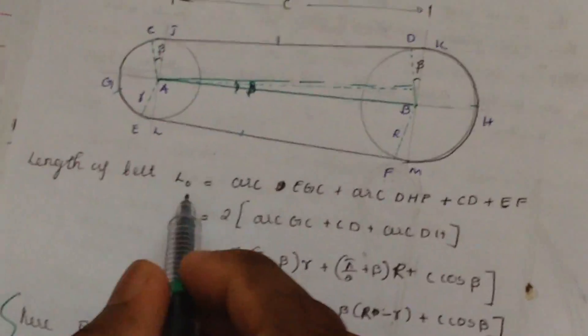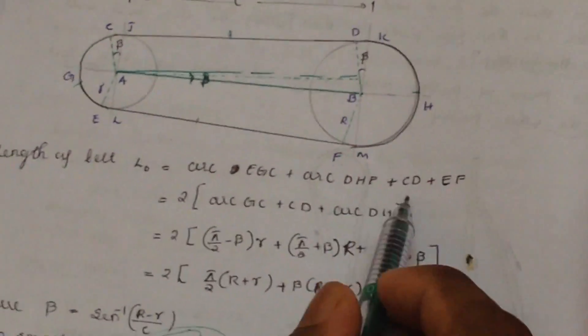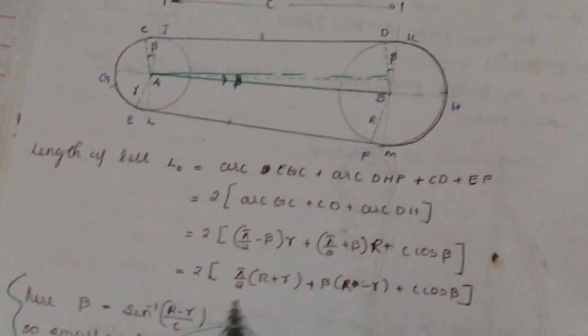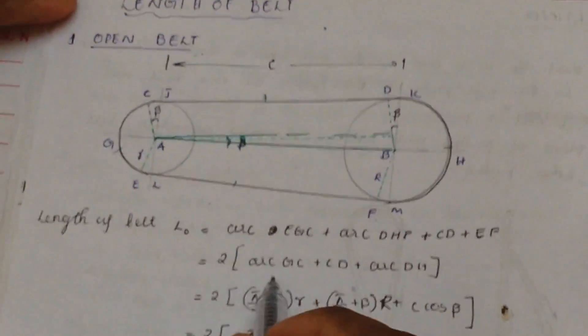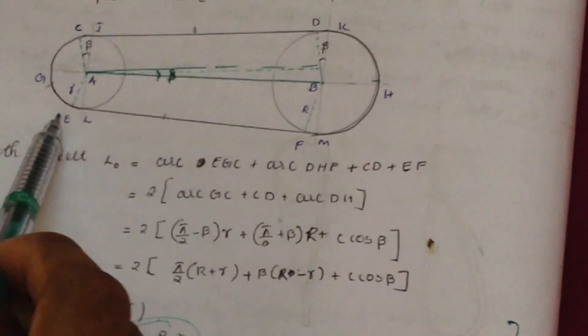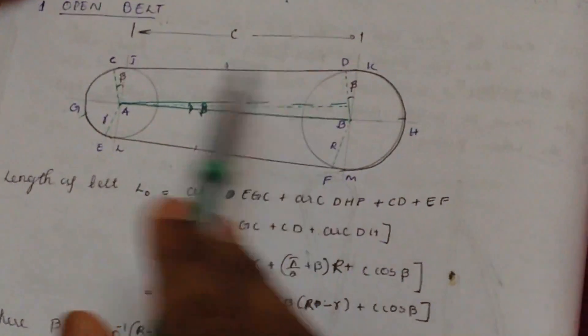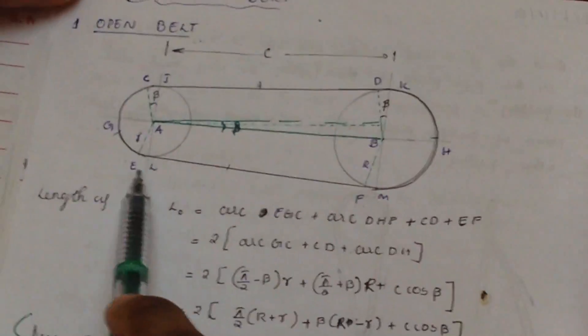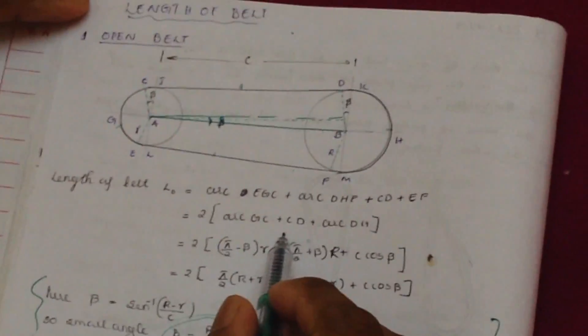So total length of belt L₀ is equal to arc length EGC plus arc length DHF plus CD plus EF. You can see that arc EGC is equal to 2 times CG, arc DHF is equal to 2 times DH, and CD is equal to EF.